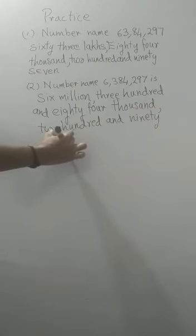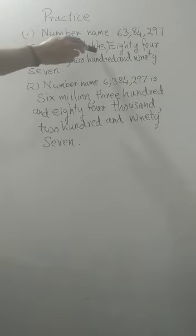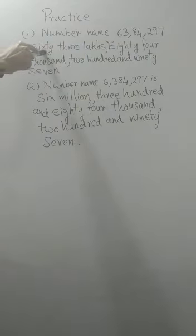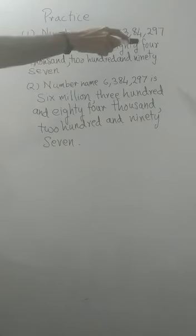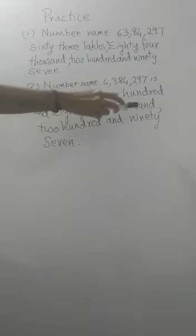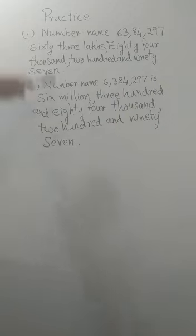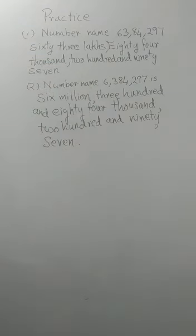So, here. What is the difference? They are the same numbers written in Indian place value and international. Here it is. 63,084,297. And that 63, the 60 lacs of 63, the 60 is changed into 6 million. And this 3,00,000 will become 384,000. So, this is the number names. So, same number is written in Indian place value and international place value system.